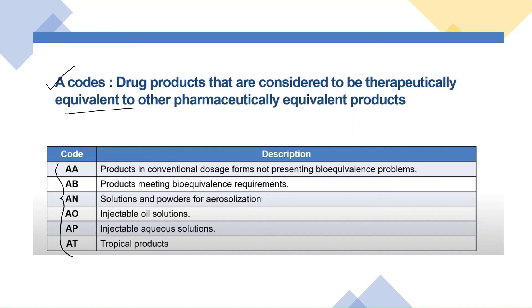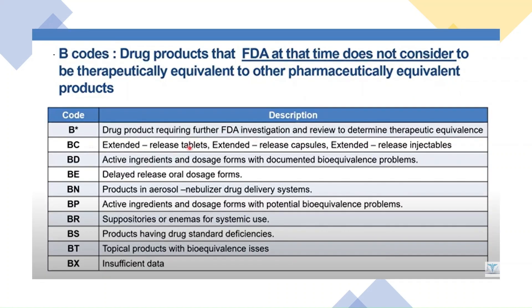These are all the descriptions of the A codes. For example, AT is for topical products, AP is for injectable aqueous products, AO is for injectable oil solutions. Similarly, B codes are for drug products which FDA, at the time of listing, considered not therapeutically equivalent.